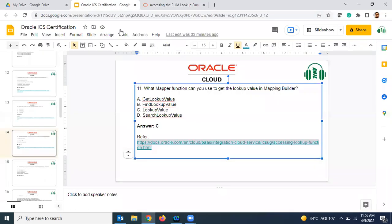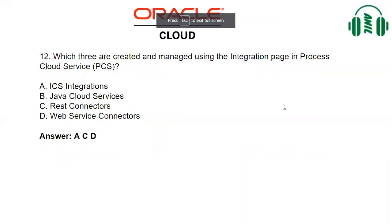Let us continue with the next question. Which three are created and managed using the integration page in Process Cloud Service? We build processes in OIC, so that is also one of the features. From Process Cloud Service, what can we create and manage?